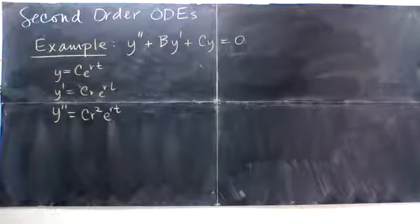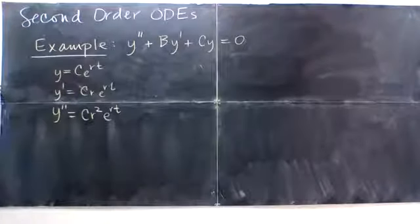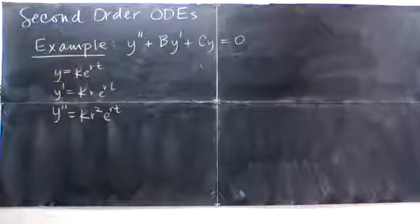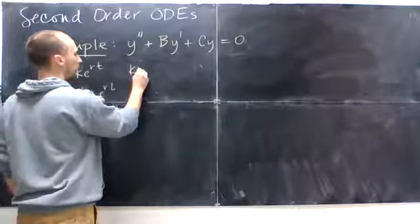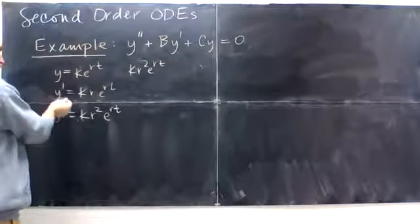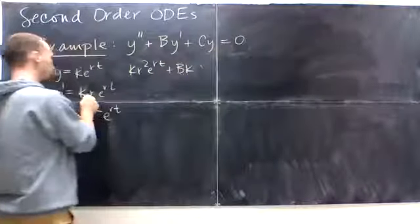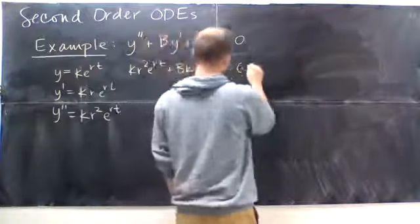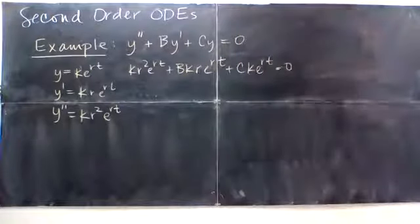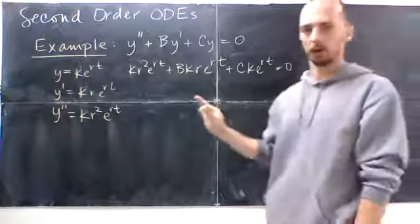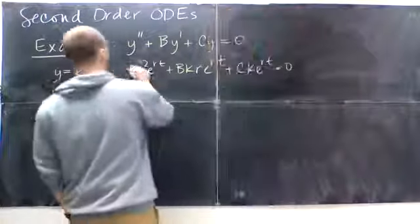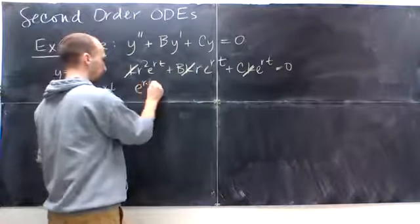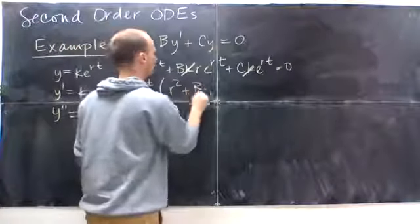And if I go and I plug these in here, I'll have y double prime is k r squared e to the rt. b y prime is going to be plus b k r e to the rt. And then c y is c k e to the rt. That's equal to 0. But I've got some things that I can factor out of this. I can get that k. I'm just going to divide through by k. Divide all the terms by k here. 0 divided by k. That's going to be 0. And I can factor out an e to the rt.